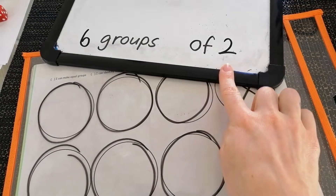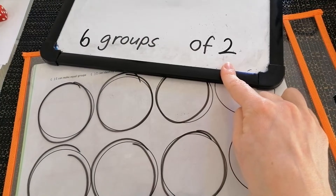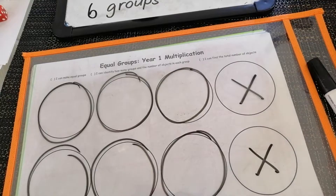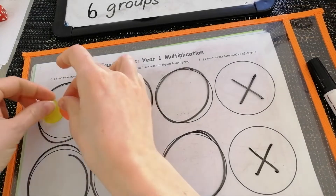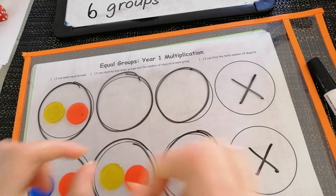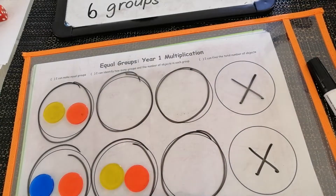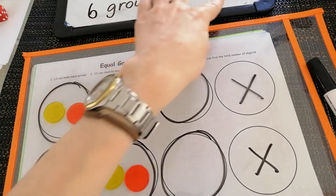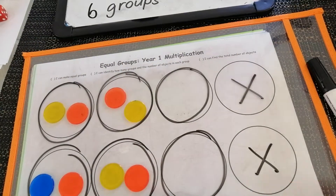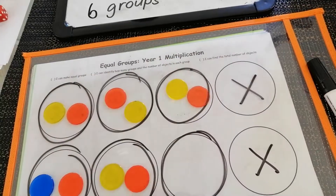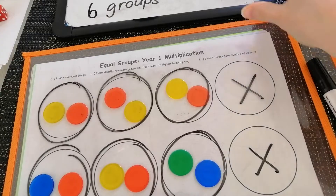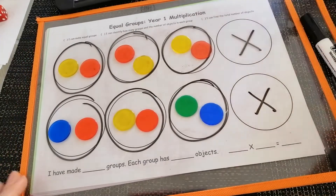Now I'm going to put my counters in my groups. How many counters do I put in each? I put in two. Two in my first group, two in my next group — six groups of two, that's why there are two in each one. Are these equal? If they all have the same number, yes they are.